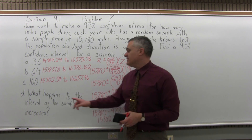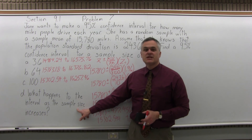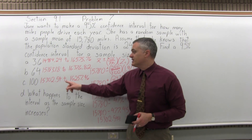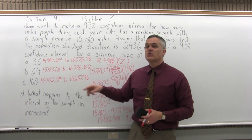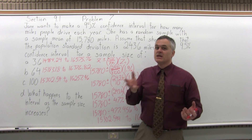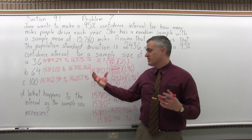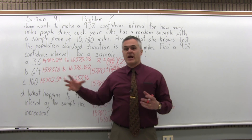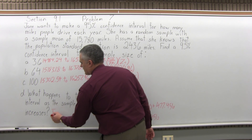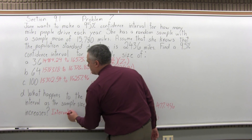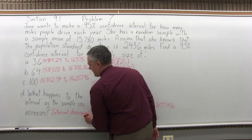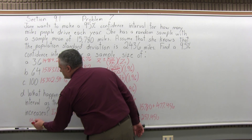For part D, what happens to the interval as the sample size increases? The interval — the distance from the low end to the high end — gets smaller and smaller. The interval decreases as you increase your sample size, which makes the interval more useful to you. The bigger the sample size you get, the more accurate your interval is. So: interval decreases, which is good, as sample size increases.